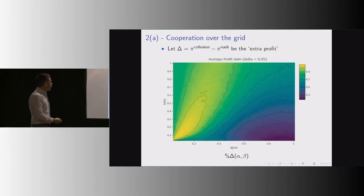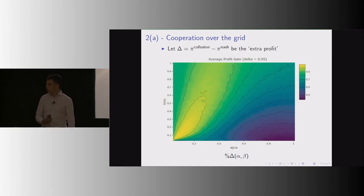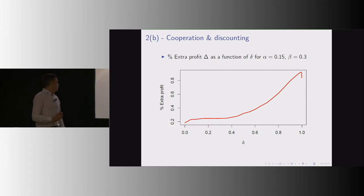This is over the alpha-beta grid, and the message from this is that cooperation is across the board. It goes from 50% around here to 99% around here. It's maximized when they experiment a lot and when the information is incorporated slowly into the existing body of knowledge.